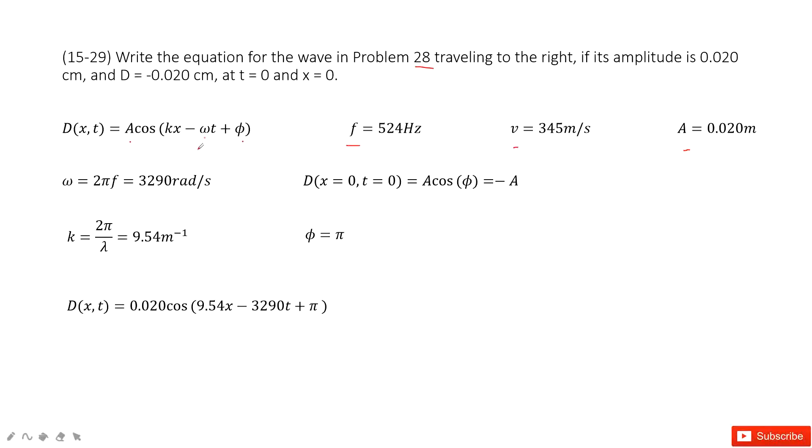The next quantity, omega, angular velocity, can be found as 2 pi f. So f is given. So omega can be obtained easily.